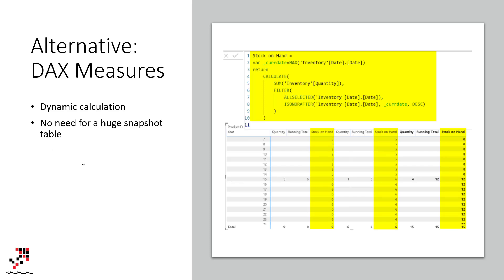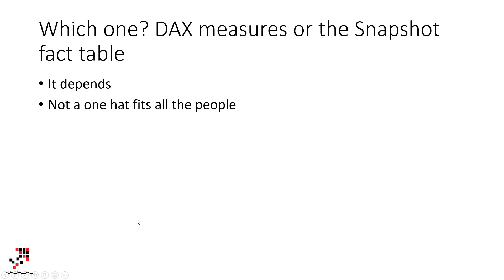An alternative to creating a snapshot fact table is to write DAX calculations and DAX measures instead. Because DAX measures are dynamic, you can write measures that calculate based on the filter context in your report — so you can have one row per year, per day, whatever you need. I have a blog article with an example of calculating stock on hand entirely using DAX measures — the link is in the description below.